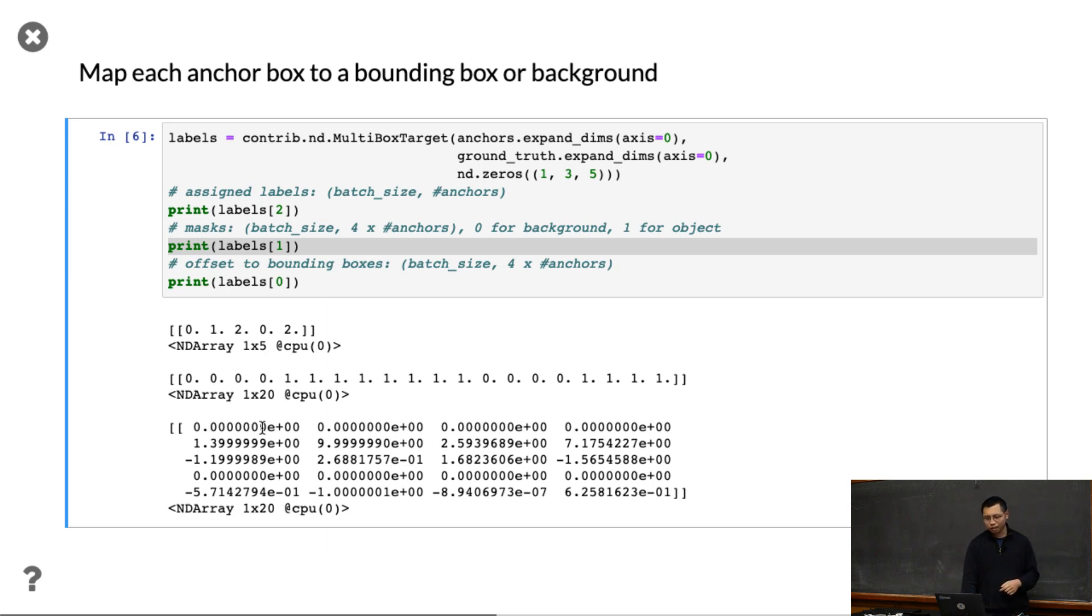The final thing is the offset - how to map the anchor boxes to the real bounding boxes. Zero if it's just a background, we don't need to map. Otherwise we give some values here. So this is a real value we can see that.